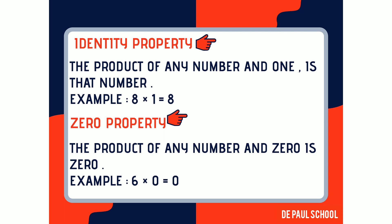The third property is the identity property. The product of any number and one is that same number. For example, 8 multiplied by 1 is equal to 8. In other words, when any number is multiplied by one, we get the same number as the answer.